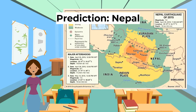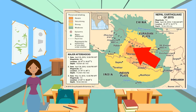Secondly, an earthquake in a developing country: Nepal in 2015. On the 25th of April 2015, a 7.8 magnitude earthquake hit Nepal, followed by several severe aftershocks in the months after.